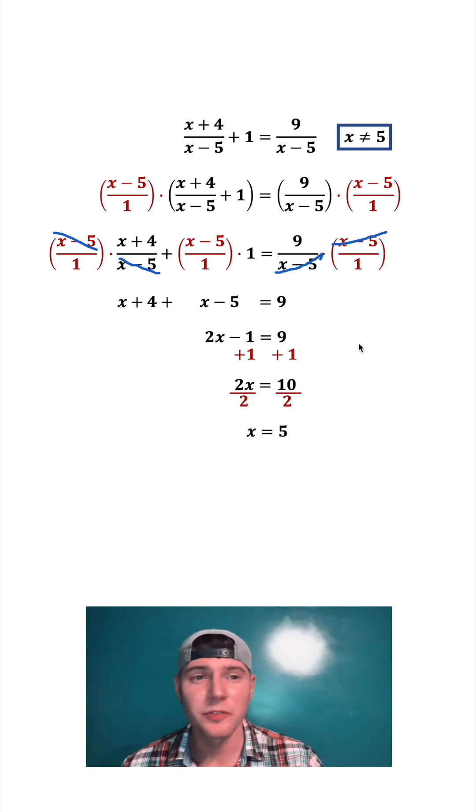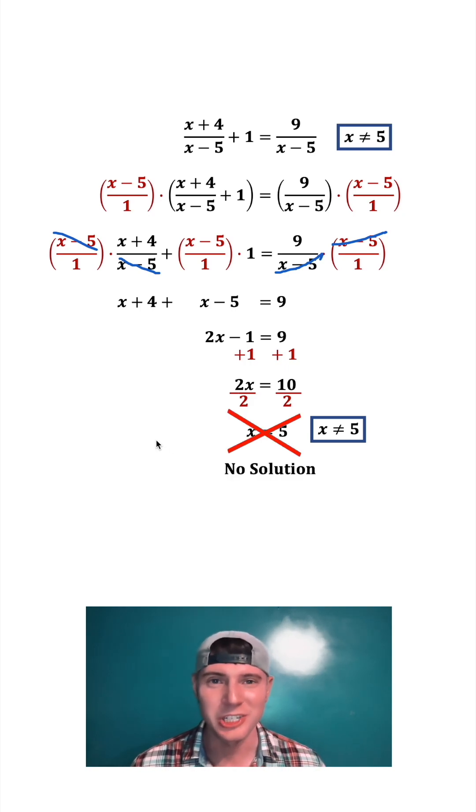We end up with x equals 5. But if you remember our domain restriction from the beginning, x cannot equal 5. So x equals 5 is not a valid solution. The answer to this is no solution. There is no solution to this equation. How exciting.